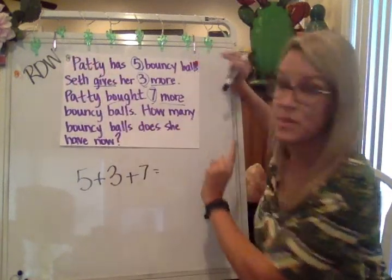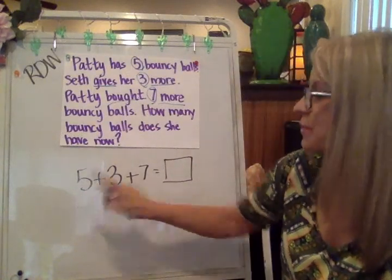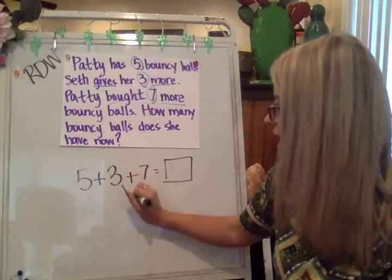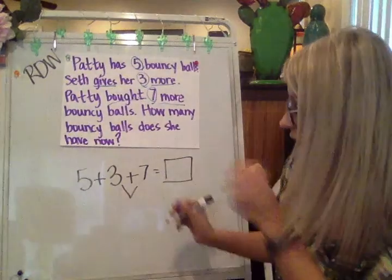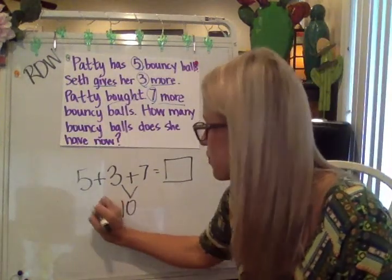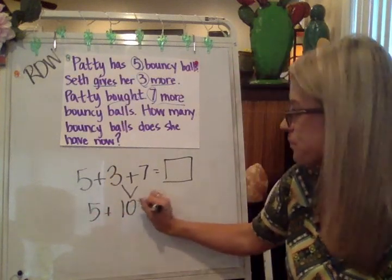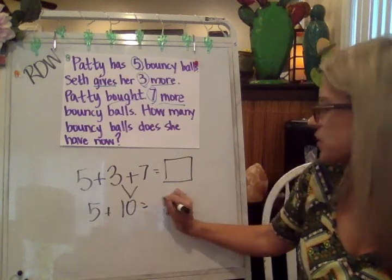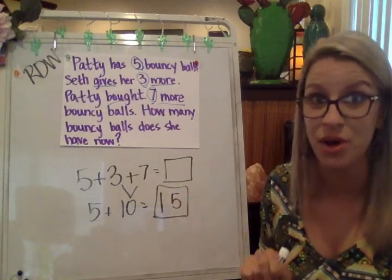That something is going to tell us how many bouncy balls she has altogether. When I look at five plus three plus seven, I see that three plus seven equals 10 — that's me pushing the easy button. So I'm going to do that step first, bring down my five, and now my new equation is five plus 10. Five ones plus zero ones is five ones, and no tens plus one ten is one ten. So Patty has 15 bouncy balls.